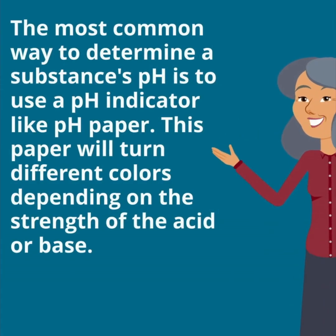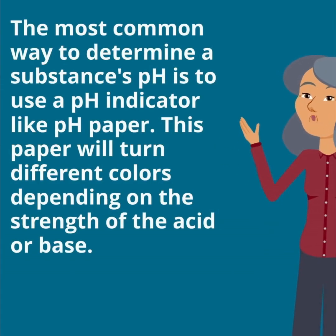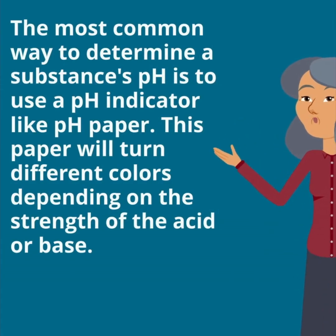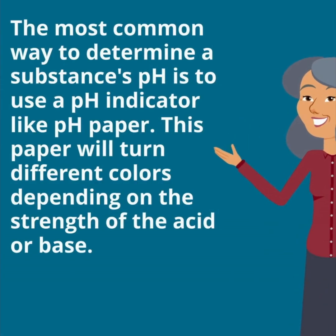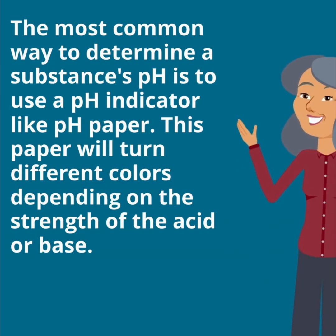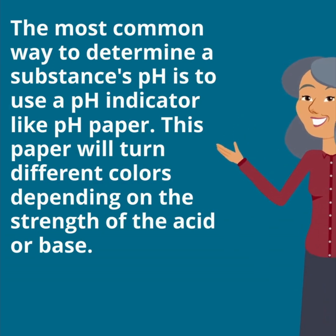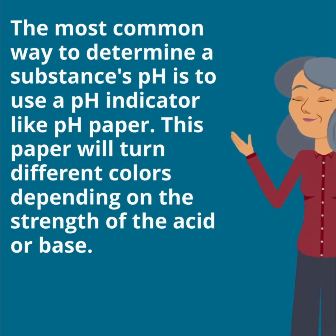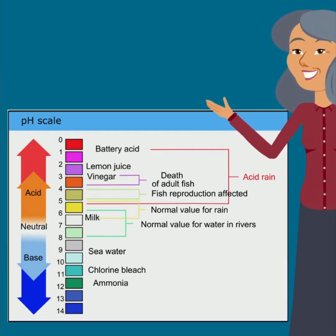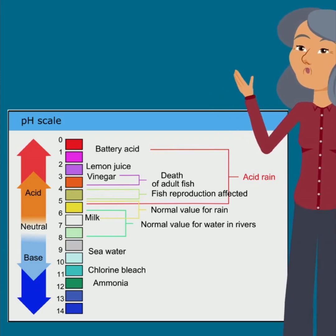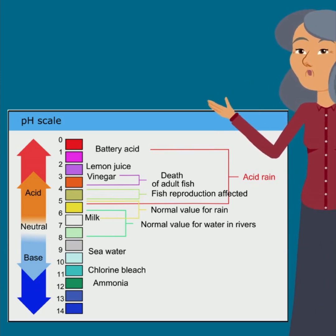The most common way to determine a substance's pH is to use a pH indicator like pH paper. This paper will turn different colors depending on the strength of the acid or base. Here's an example of a pH scale with common substances.